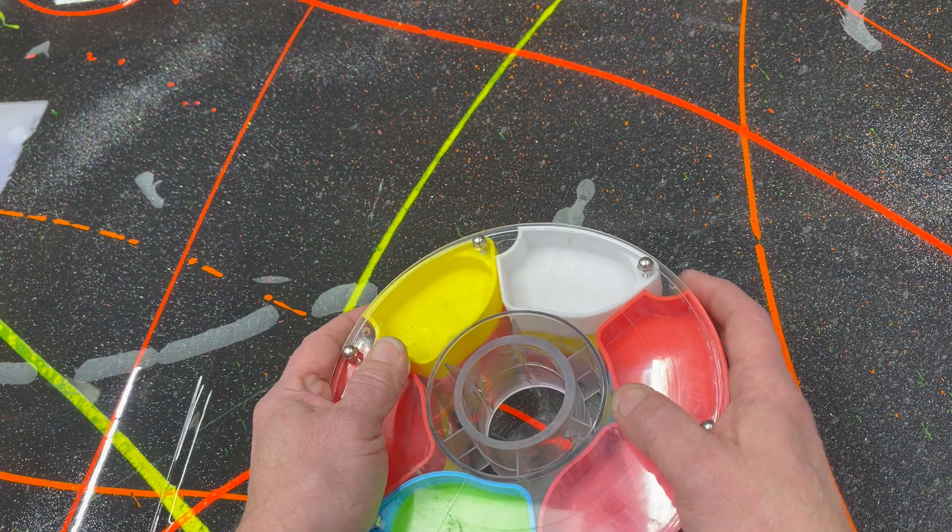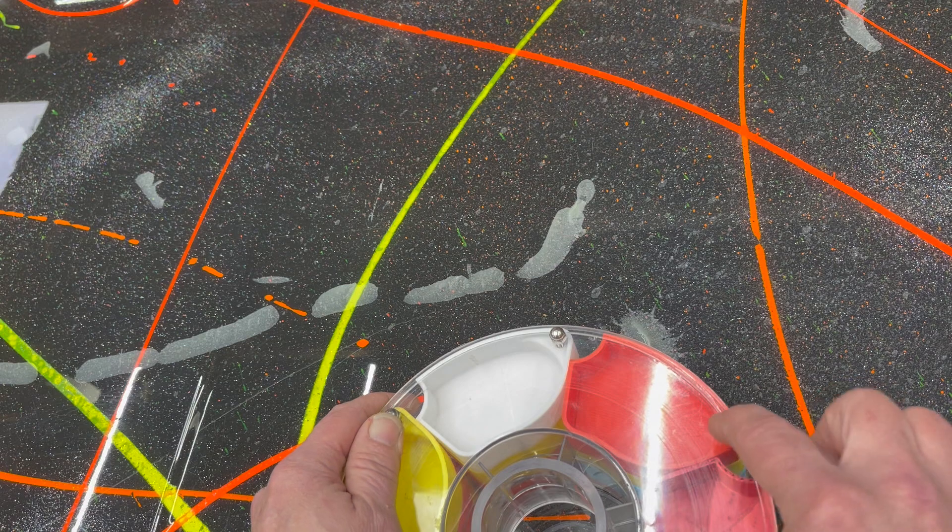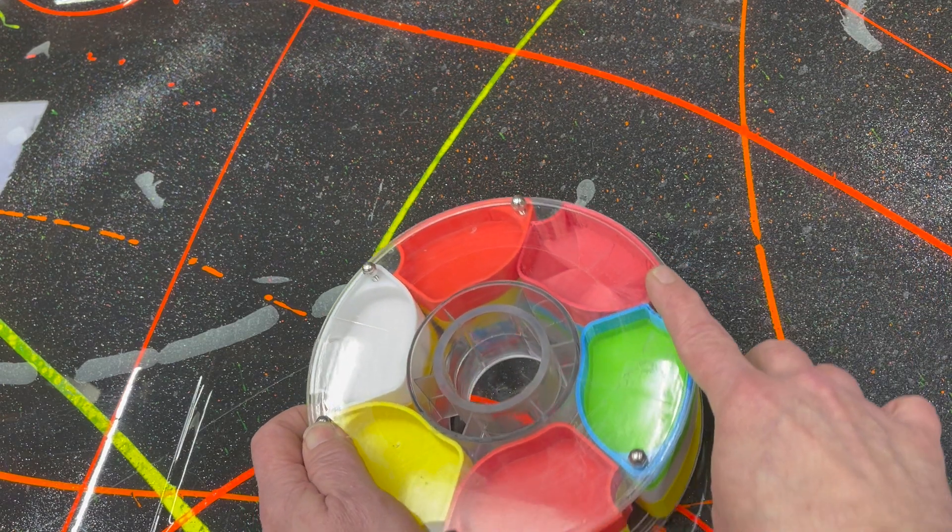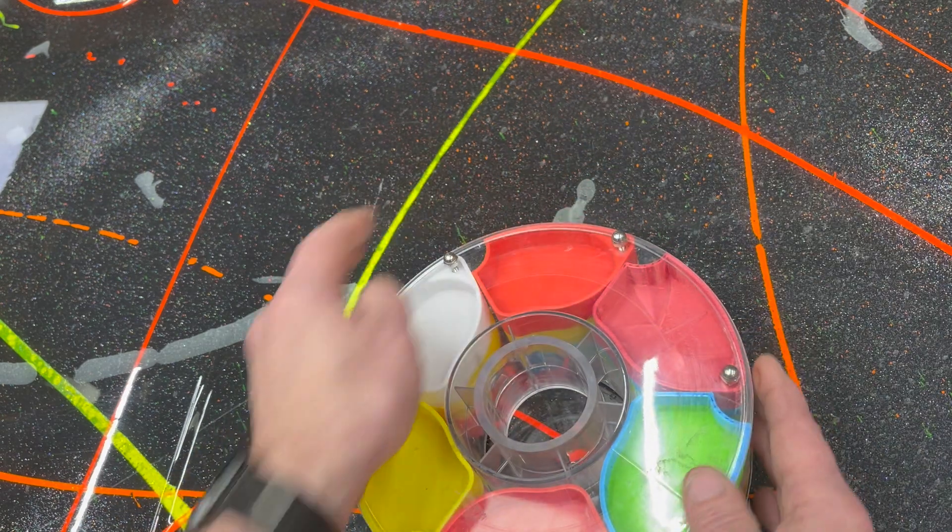And really, the trick to making this correct is getting these holes in the exact right place. Because if one is too far over, that makes them all too far over.